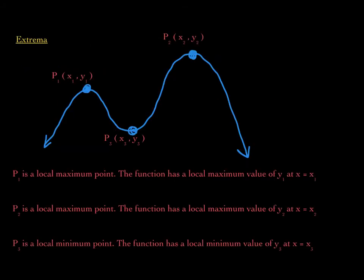Now we will study something called extrema. In general, the highest point at a peak in the graph is known as a local maximum point, and the lowest point in a valley is known as a local minimum point. Looking at this graph, the point p sub 1 is considered a local maximum point. There is another local maximum point as well, and there is a valley, making that point a local minimum point.